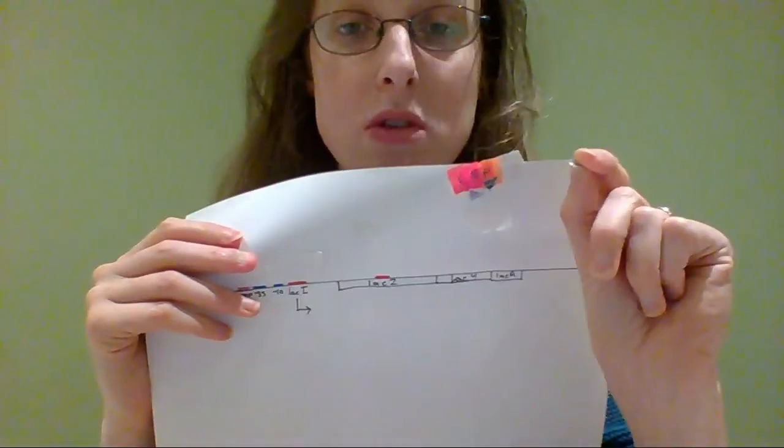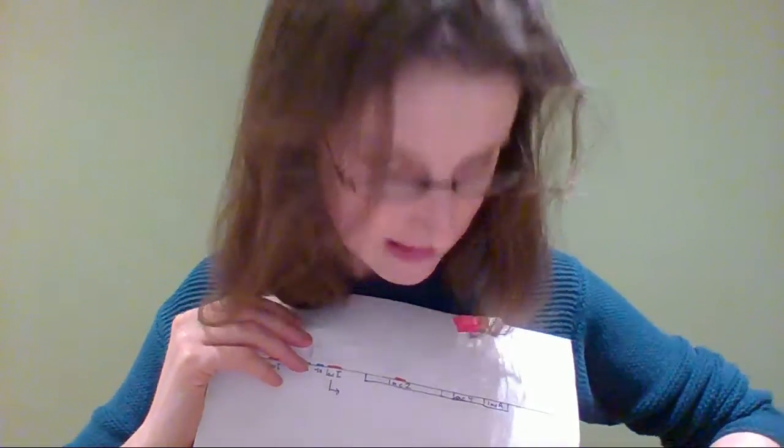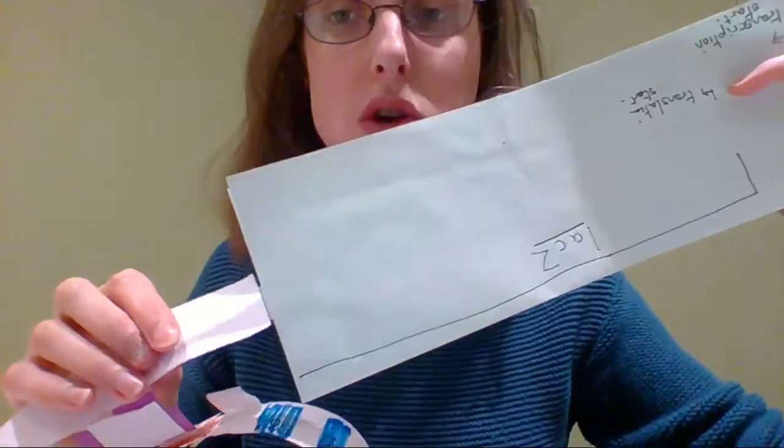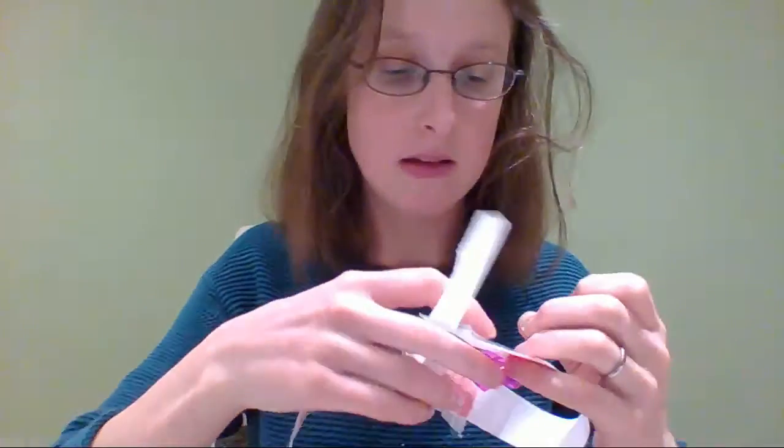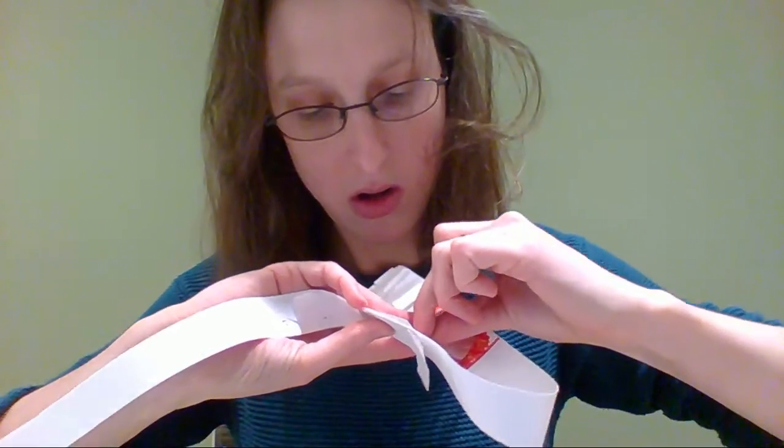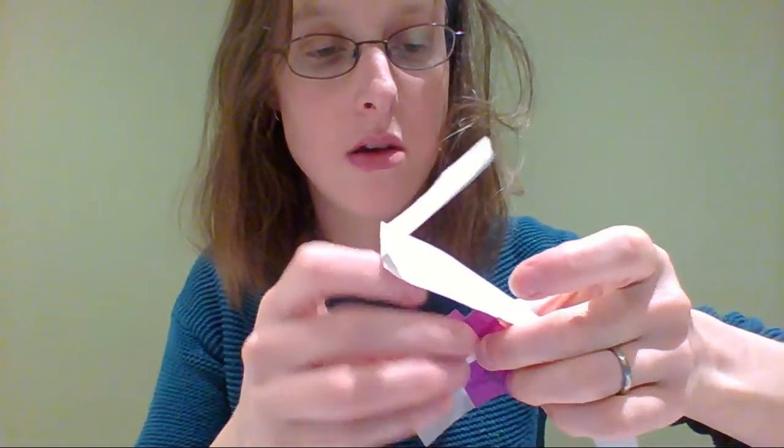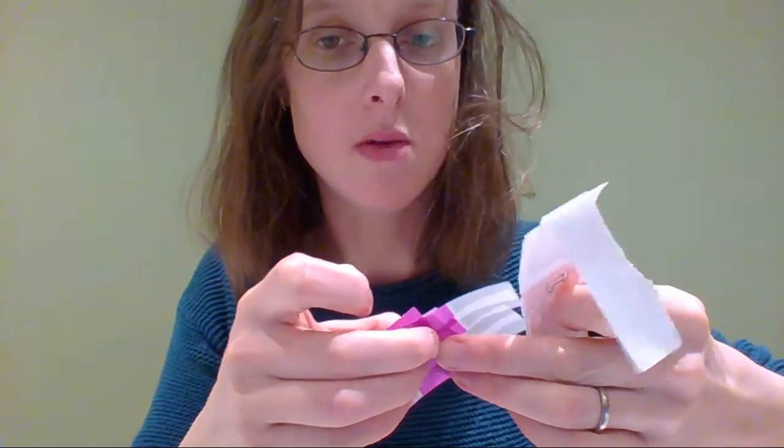And now we've also got some lactose, which is great. So what this lactose does is it gets converted into allolactose. I'm not going to change stickers. And it goes over to my lac operon, and it binds to lac I. And when it does that, lac I can no longer bind, so it comes off and it floats away.